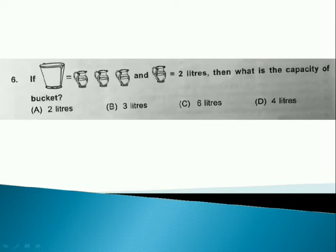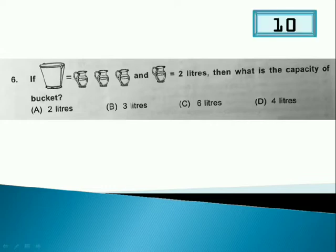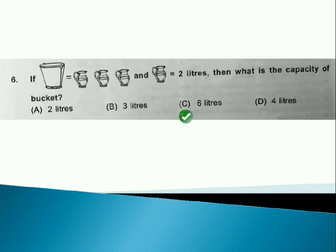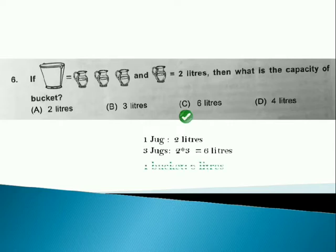If bucket is equal to 3 jugs and 1 jug is equal to 2 liters, then what is the capacity of bucket? Answer is option C because 1 jug is 2 liters and 3 jugs will be 6 liters. Hence, capacity of 1 bucket is 6 liters.